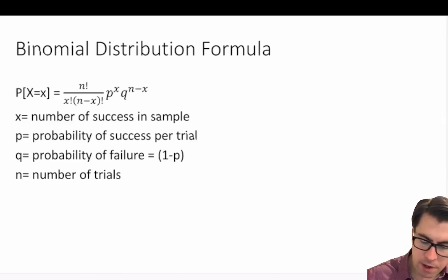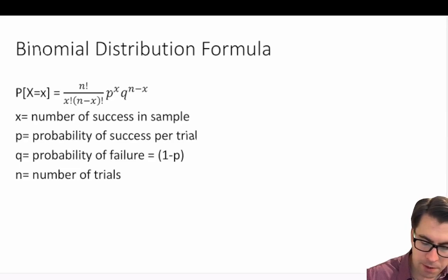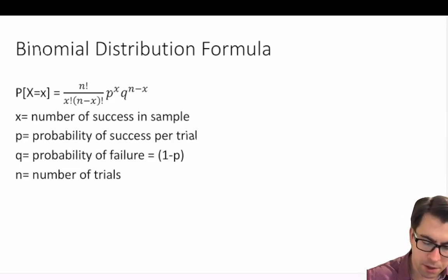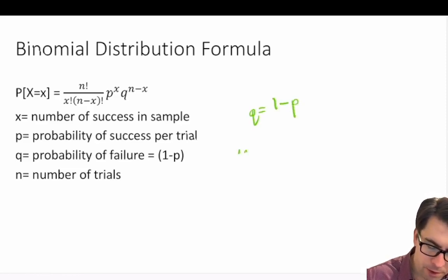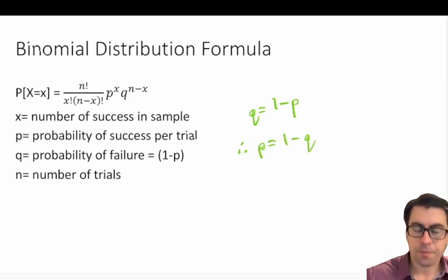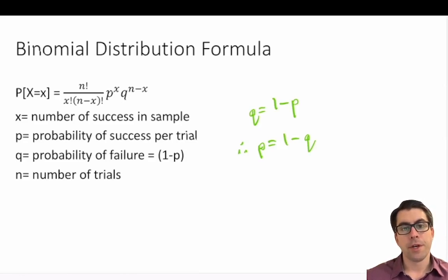Also included is q to the power of (n minus x), representing the number of non-successes or failures. Importantly, we're typically given either p or q, and there's a key relationship: q equals 1 minus p, and therefore p equals 1 minus q. So if we know p we can solve for q, and vice versa.